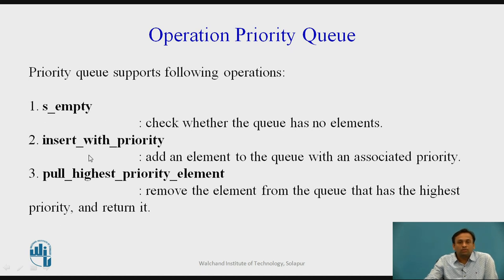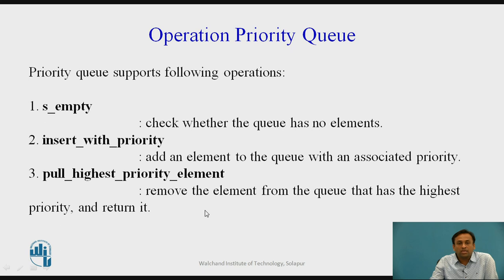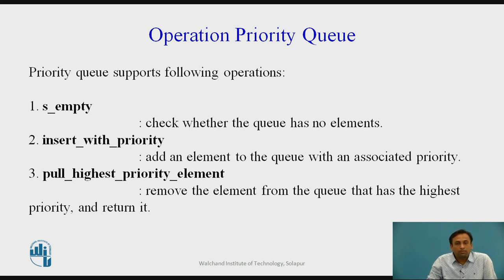The next operation is insert with priority — adding an element to the queue with an associated priority. There are two types: ascending and descending. The third operation is pull highest priority element, which removes and returns the element with the highest priority. For example, in a hospital, an injured person must be attended to first based on priority — the doctor stops everything to attend to that person. Similarly, priority queues are used in job scheduling and CPU scheduling.